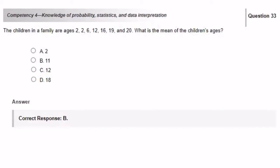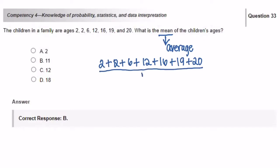The children in the family are ages 2, 2, 6, 12, 16, 19, and 20. What is the mean of the children's ages? The word mean indicates average or to find the average of a set of numbers. To calculate the average, you add up all the numbers in the data set. Then you divide it by the total number that you have. So in this data set, we have seven numbers. We're going to add up all seven numbers, which equals 77, and divide it by 7 to get 11.